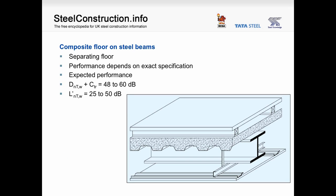A composite floor supported on steel beams is suitable for a separating floor. It consists of a composite slab formed on profiled metal decking, with a floor treatment applied above — here shown as a batten system — and a suspended ceiling below, consisting of a plasterboard layer supported on a light steel metal frame. The exact specification, dimensions and density of all these products contribute to the sound insulation achieved. Based on typical specifications, DnTW plus CTR is between 48 and 60, and the LNTW impact value is between 25 and 50.